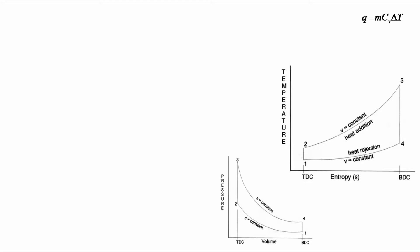Otto cycle efficiency η is equal to network done by heat input given. This can also be written as 1 minus Qout by Qin. That is equal to 1 minus (T4 minus T1) by (T3 minus T2). That is equal to 1 minus T1(T4/T1 minus 1) by T2(T3/T2 minus 1).